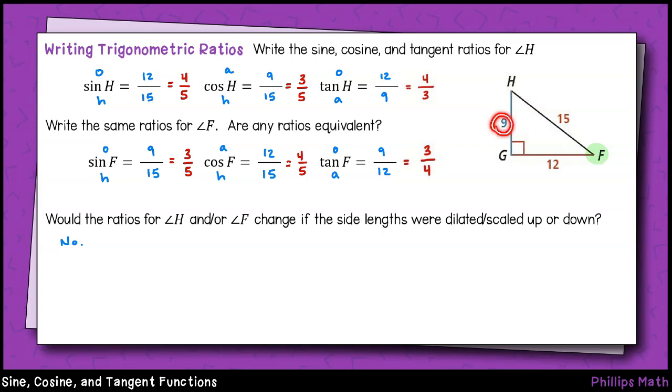For example, we're currently looking at a dilated 3, 4, 5 triangle. The ratios ultimately simplify down to 4 fifths, 3 fifths, and so on.